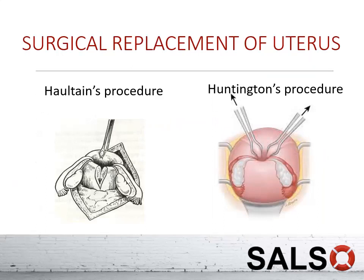For surgical replacement there are two procedures: Huntington's procedure and Halton's procedure. Both involve a laparotomy. In Huntington's procedure, the round ligament is identified and Allis forceps are used to gradually pull the uterus upward. In Halton's procedure, the posterior part of the cervical rim is incised — not the anterior, to avoid the bladder — and once the uterus is reverted, the incision is sutured. General anaesthetic agents such as halothane, or tocolytic drugs such as salbutamol and ritodrine, can be used to relax the uterus.